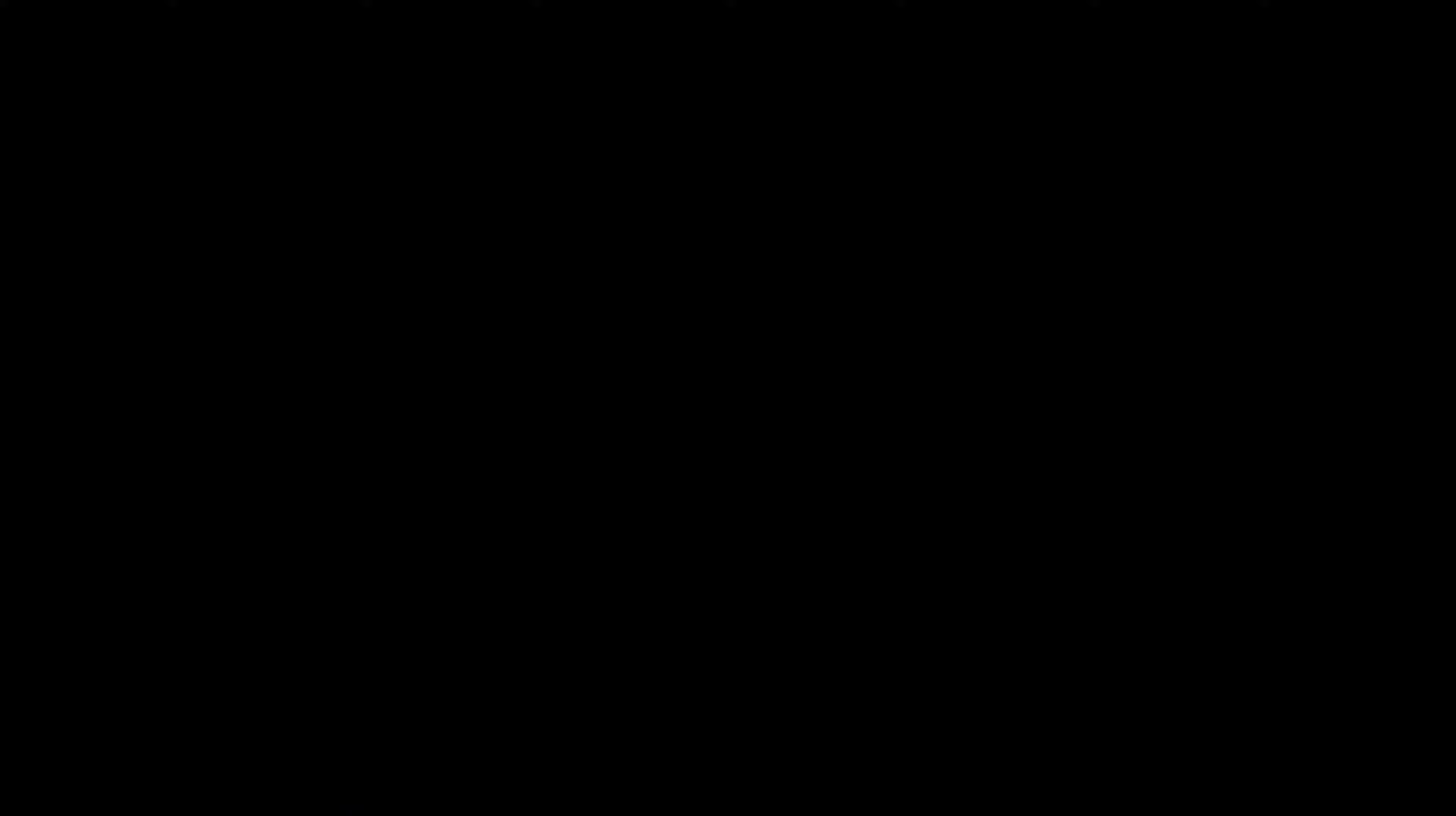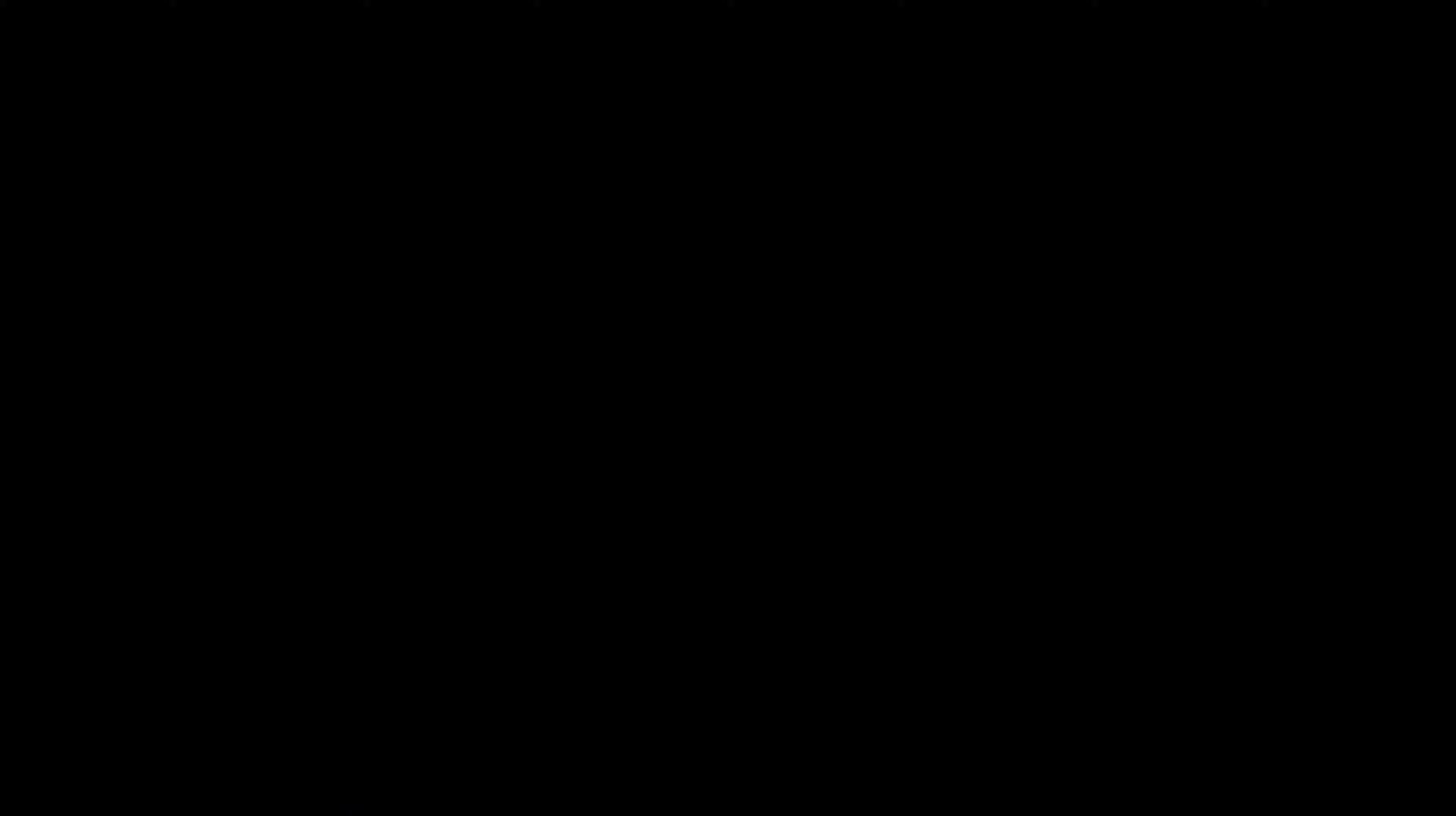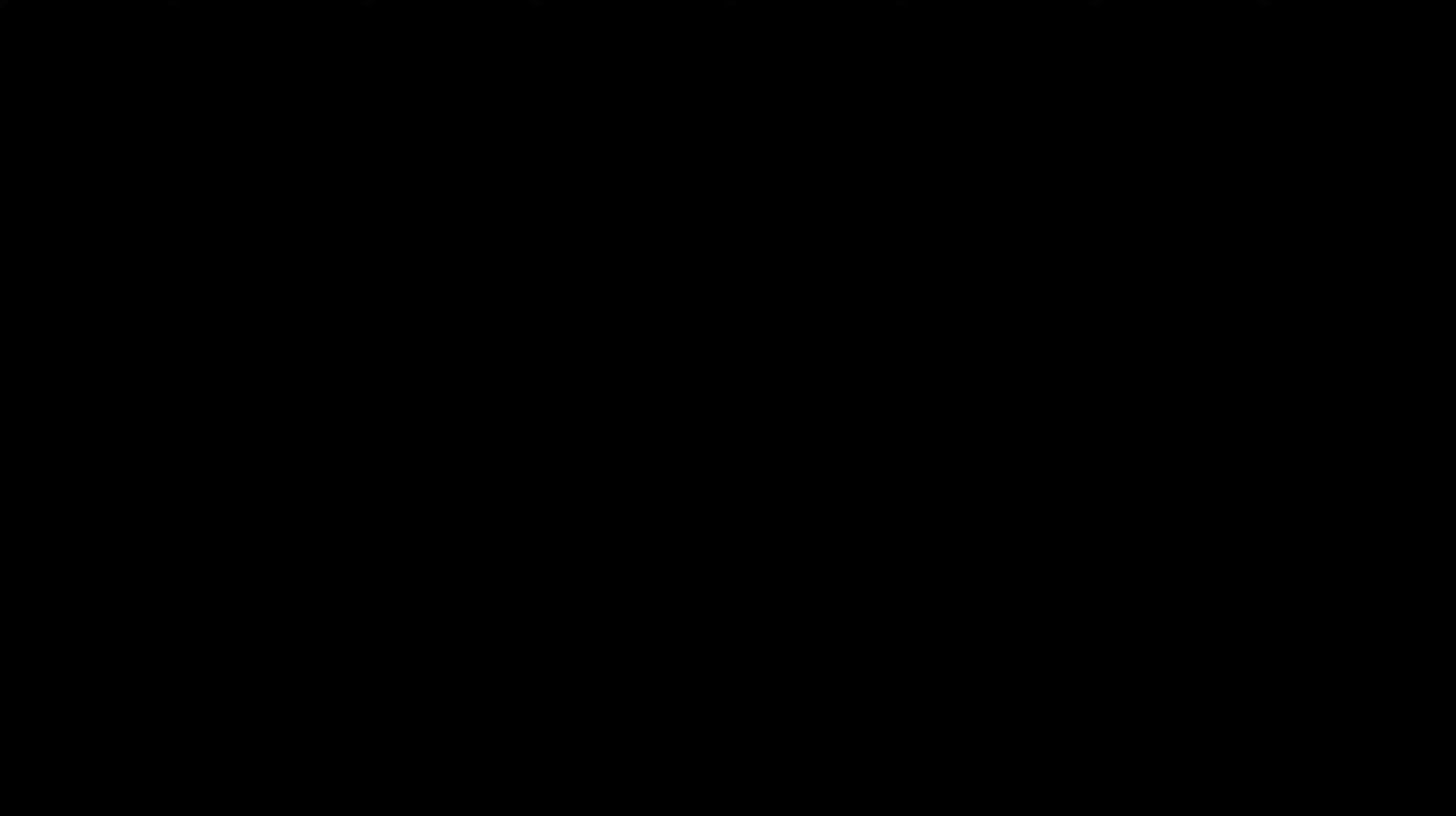However, are all squares going to be rectangles? You should be able to answer these questions. All squares can be rectangles based on the definition of rectangles. Based on the definition of squares, only some rectangles can be squares. I hope this clears up confusion on whether a square is a rectangle or a rectangle is a square, and you now have a better idea of the hierarchy between the two.